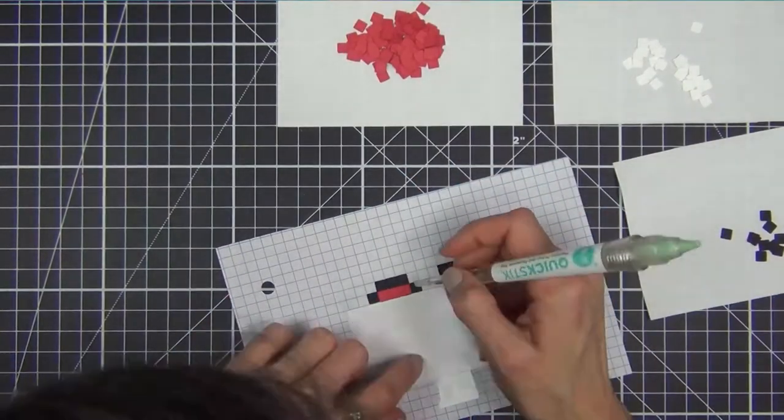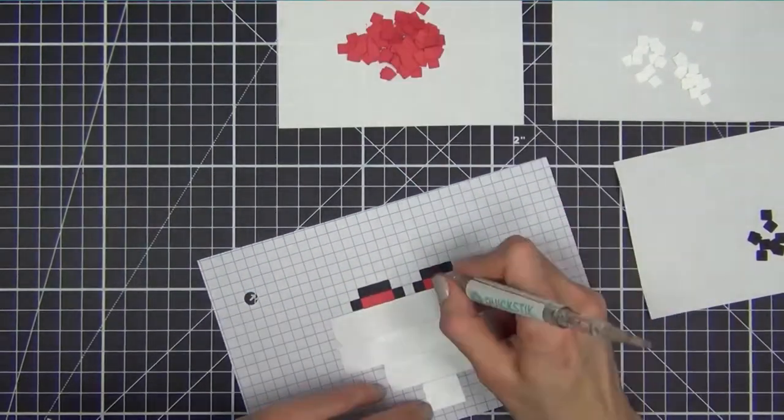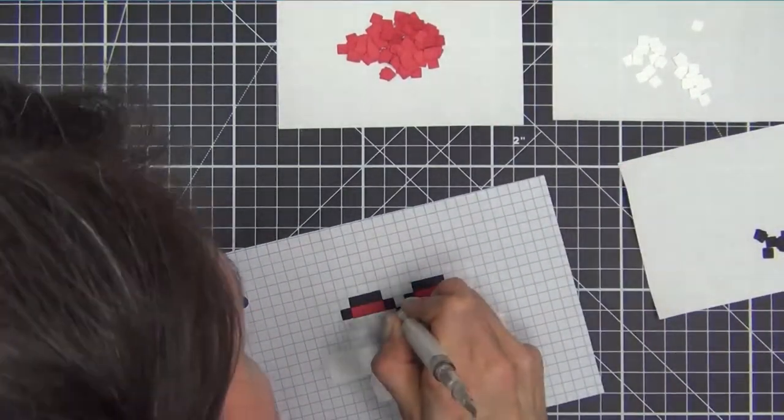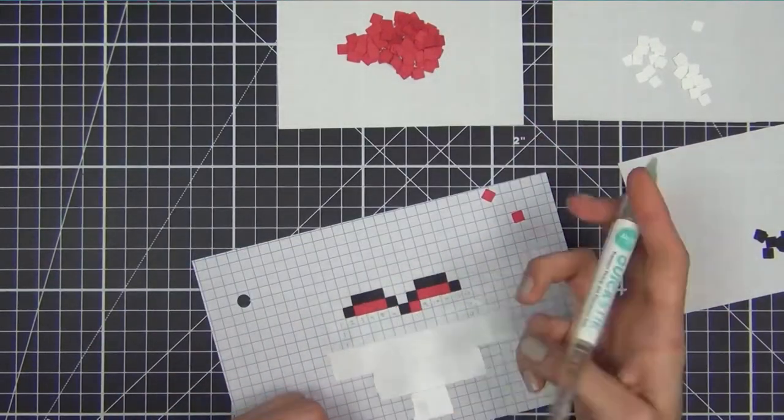To pick up the squares, I'm using a quick stick tool from We Are Memory Keepers. It's perfect for projects like these, but if you don't have one, a pair of pinch tweezers will do the trick.